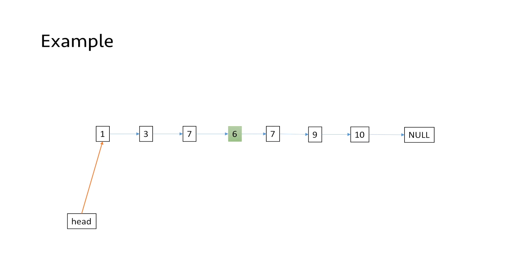Let's understand it using an example. Suppose this is the linked list given to us and we need to find the middle element. As we can see, the middle element of this linked list is 6. But how can we get to this element using only a single pass and two pointers?